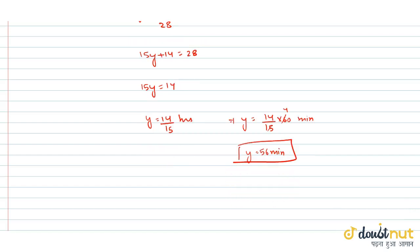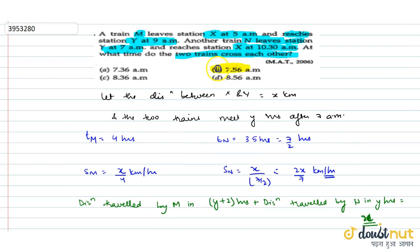So 7 a.m. plus 56 minutes means both trains m and n will meet at 7:56 a.m. This is our required answer. Looking at the options, option B is the correct solution.